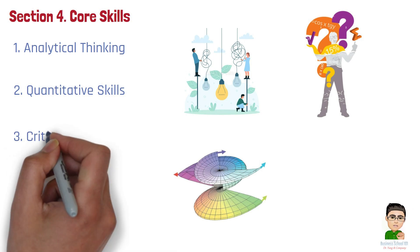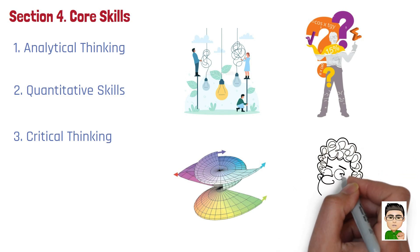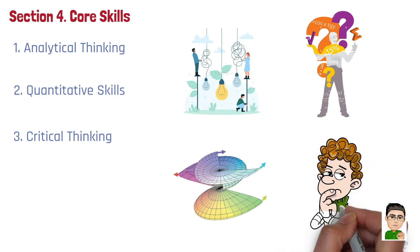Number 3. Critical Thinking. The ability to evaluate different perspectives and question assumptions is crucial in microeconomics. Critical thinking allows you to assess the implications of economic policies, market outcomes, and the impact of different market structures on welfare.